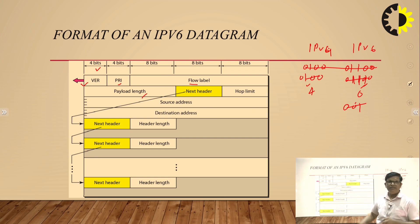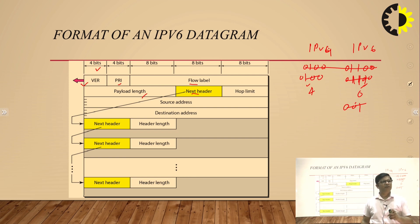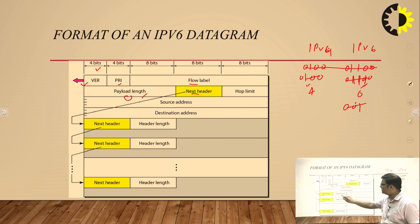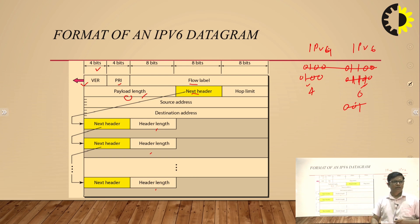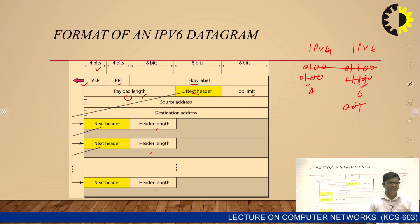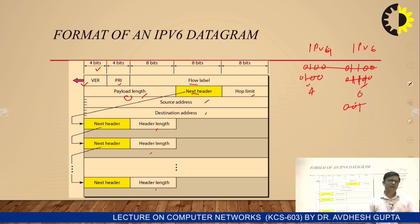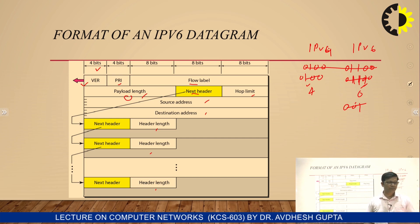The next header field means that if the size of data increases, it is divided into several frames. The first frame is here, next is here, and so on. Hop limit indicates how many routers the data has to pass through to reach its destination. The source and destination address fields are the same as in IPv4.